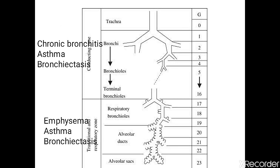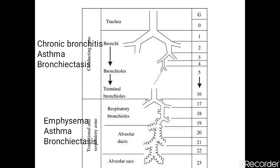Our respiratory tract is divided starting from the nose and mouth going to the trachea. After the trachea, it divides into the bronchi, then to bronchioles, then to terminal bronchioles. From the trachea and bronchi down to the terminal bronchioles, we call this the conducting zone, because we are only conducting air and moisture — there is no gaseous exchange here.